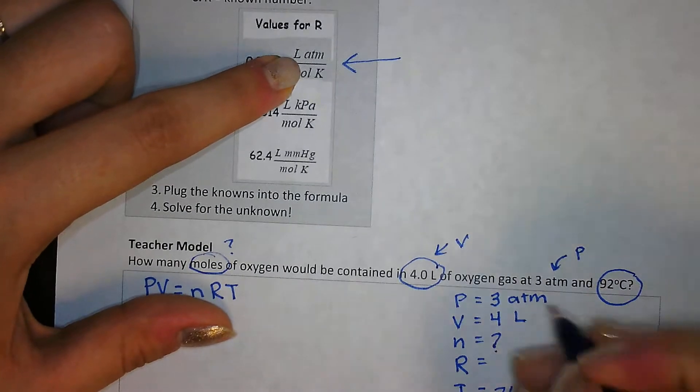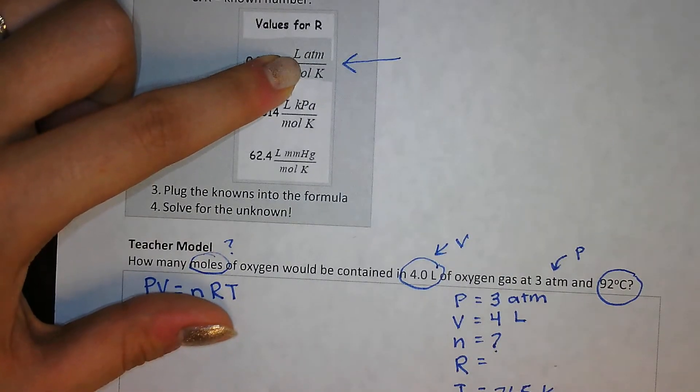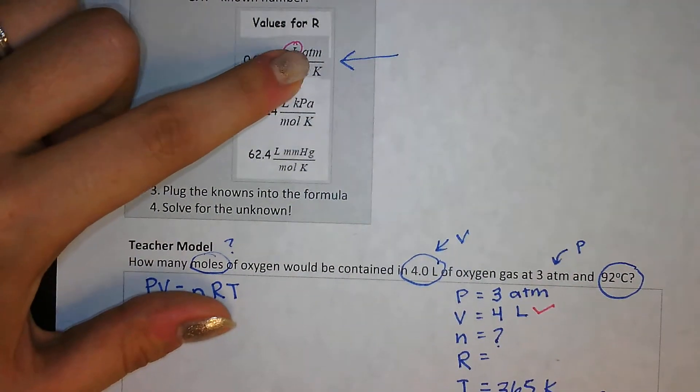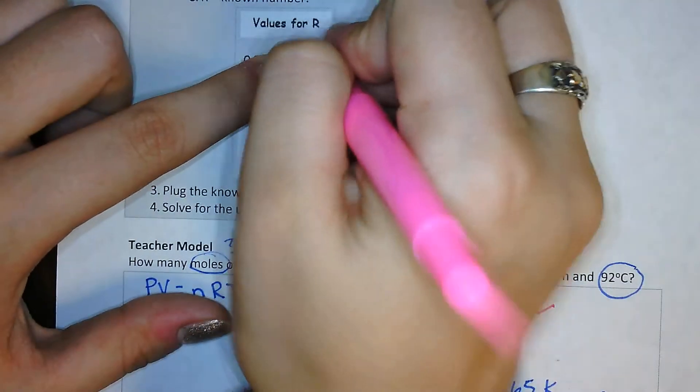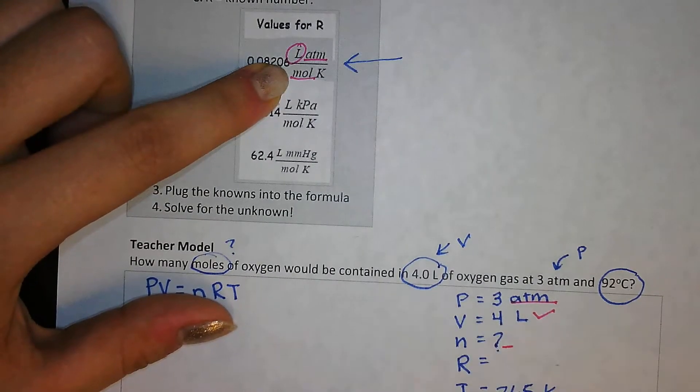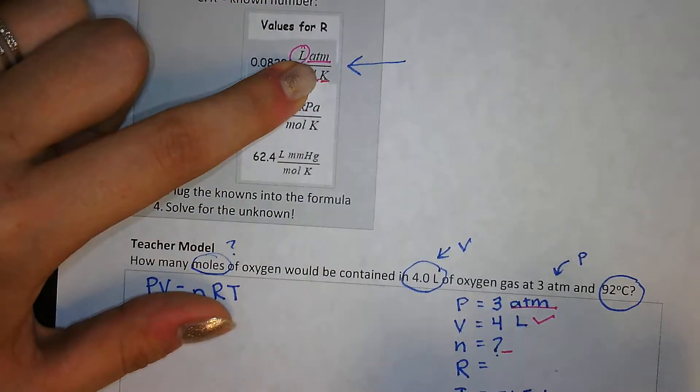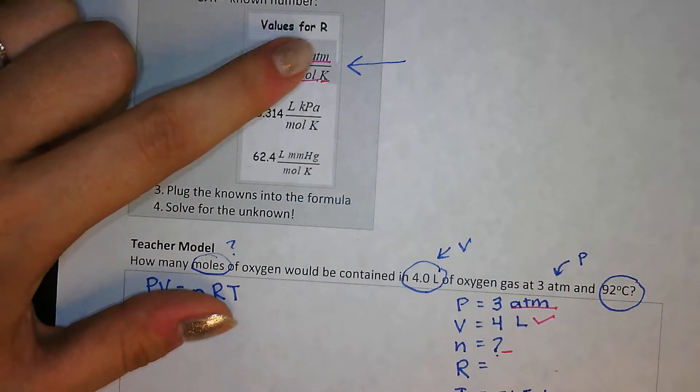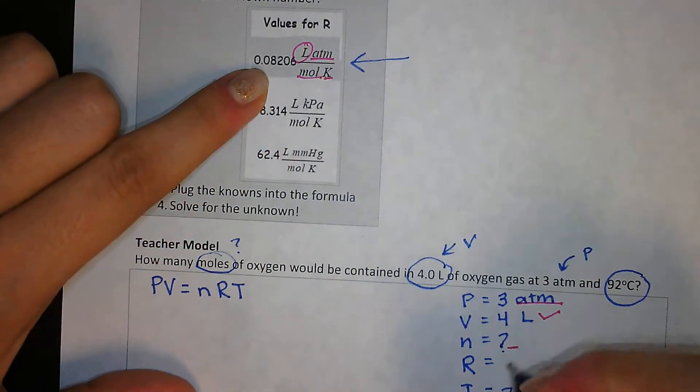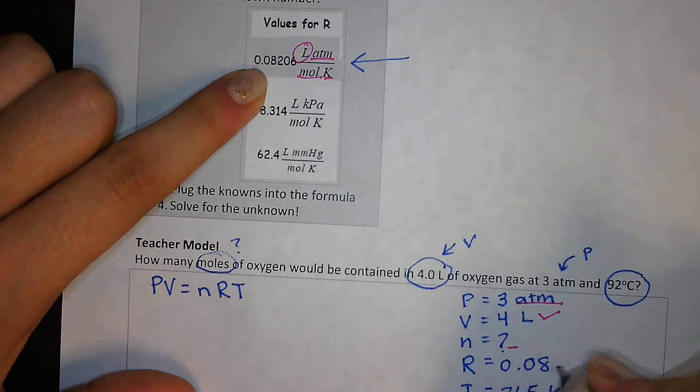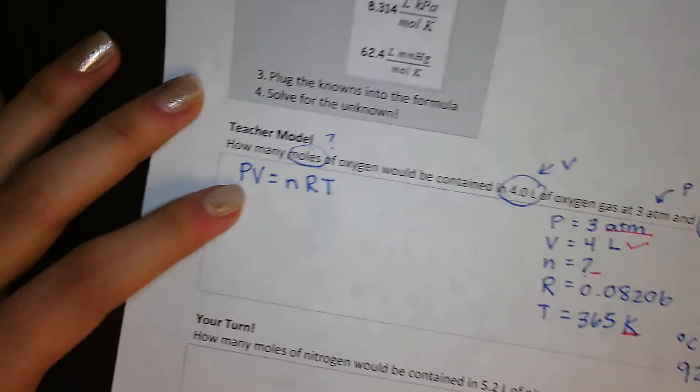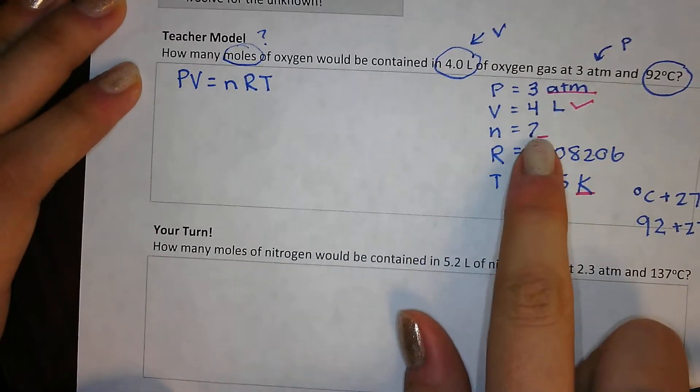I got liters. Let me do it in a different color here. So I got liters. I got atmospheres, atm. I got atmospheres, atm. I got moles. Moles is what I'm trying to find. And I got Kelvin. And I got Kelvin. So all of these units match with this gas constant. And so R is going to have a value of 0.08206.